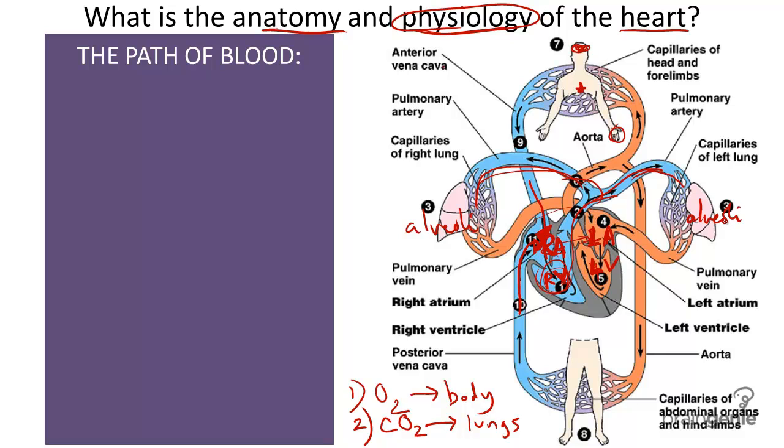After we exchange carbon dioxide for oxygen at the alveoli, we return this oxygen rich blood now, back to the heart. And both of these paths end up at the same spot, in the left atrium.